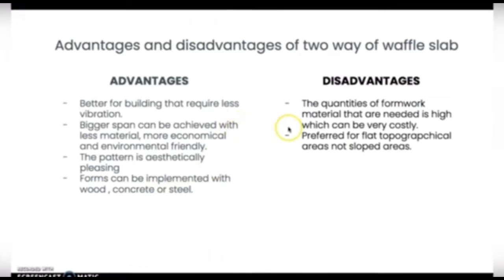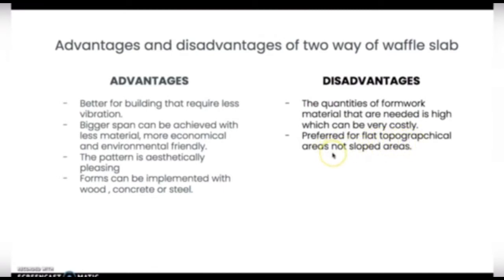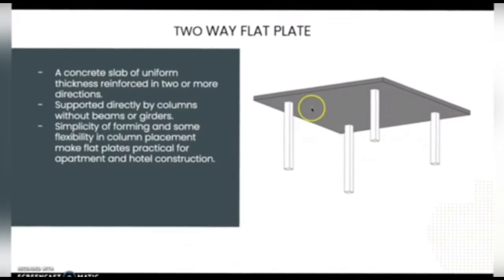The disadvantages of using the two-way waffle slab are: the quantity of formwork material needed is very high, and because of that it is very costly. It is also preferred for flat topographical areas only, not for sloped areas.